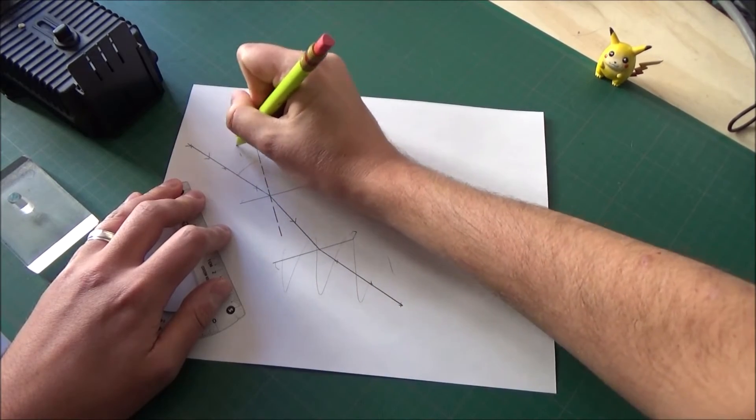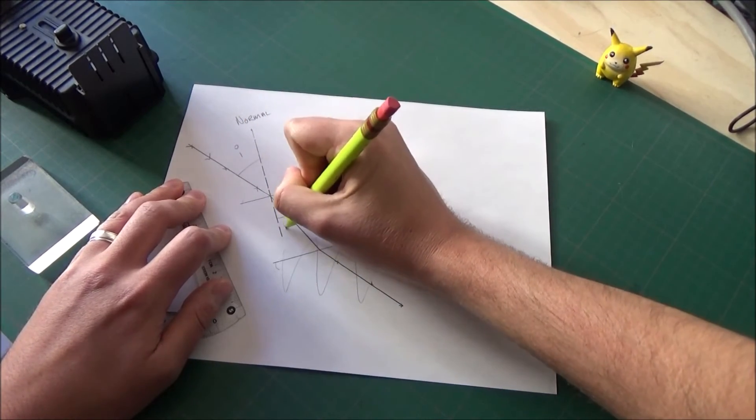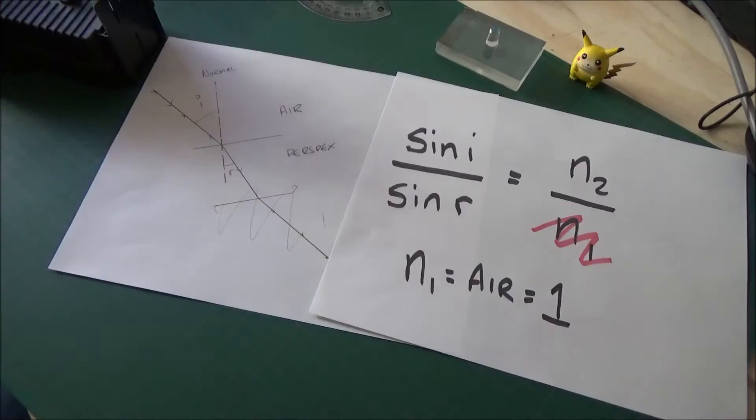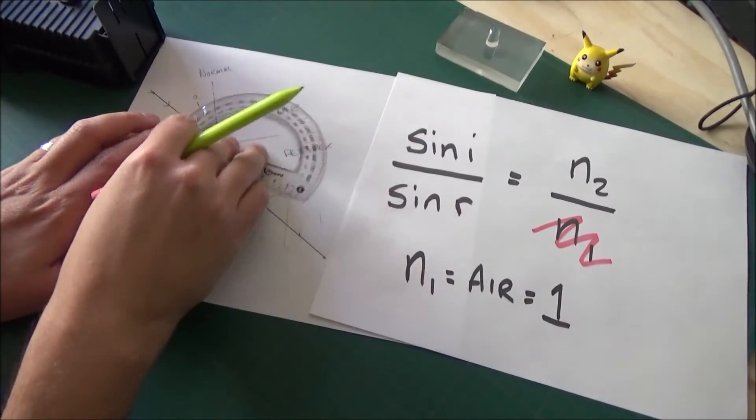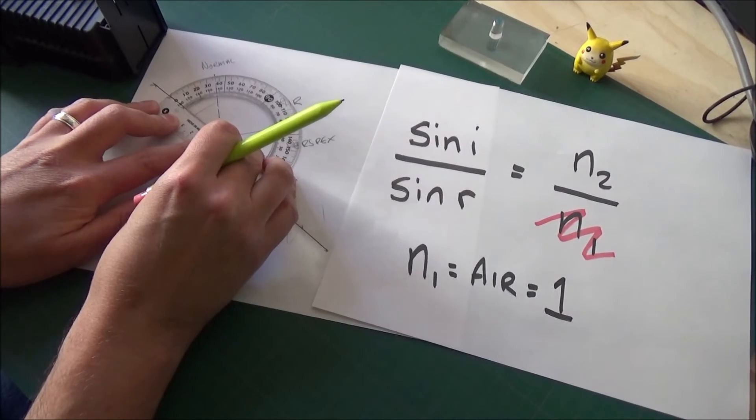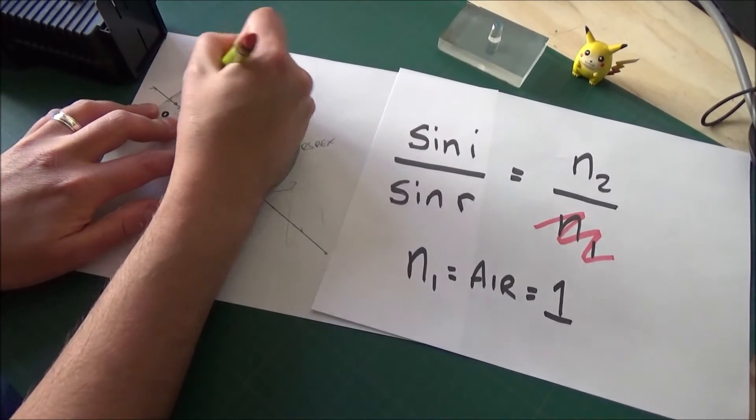And our angle of incidence is going to be the angle between the incident ray and the normal, and our angle of refraction is going to be between the normal and the ray that is refracted as well. So, now we're going to measure those two angles. We need to be very precise with this. Take your time. It's very important that we get this correct.